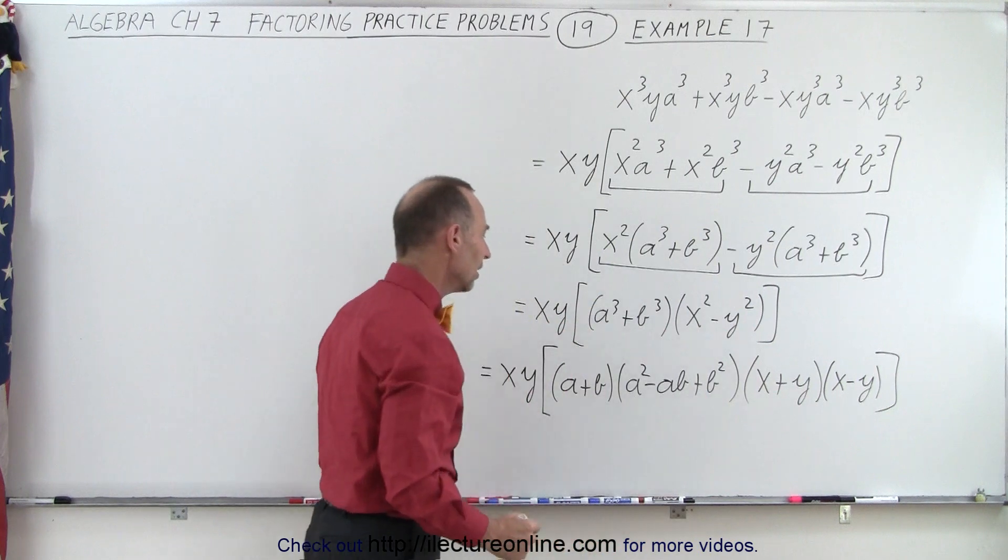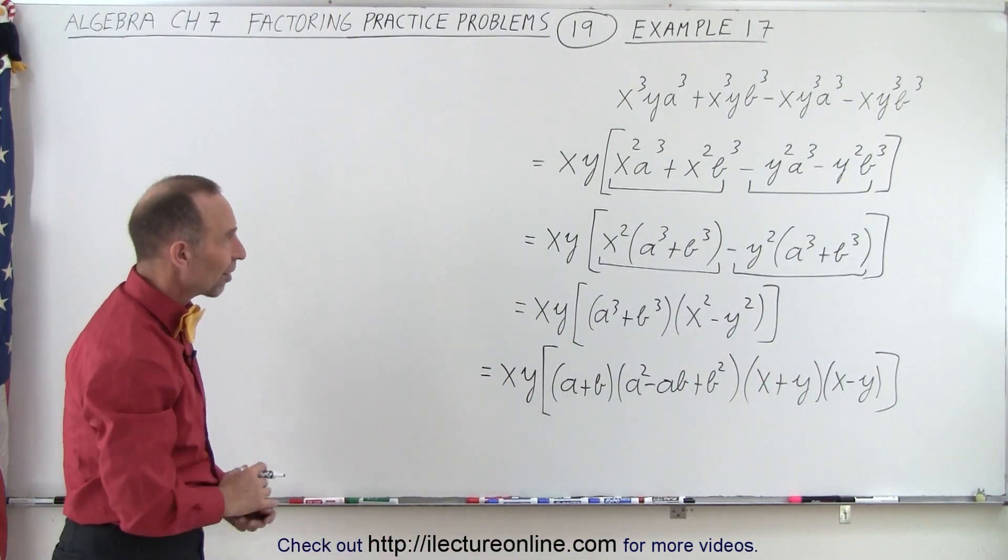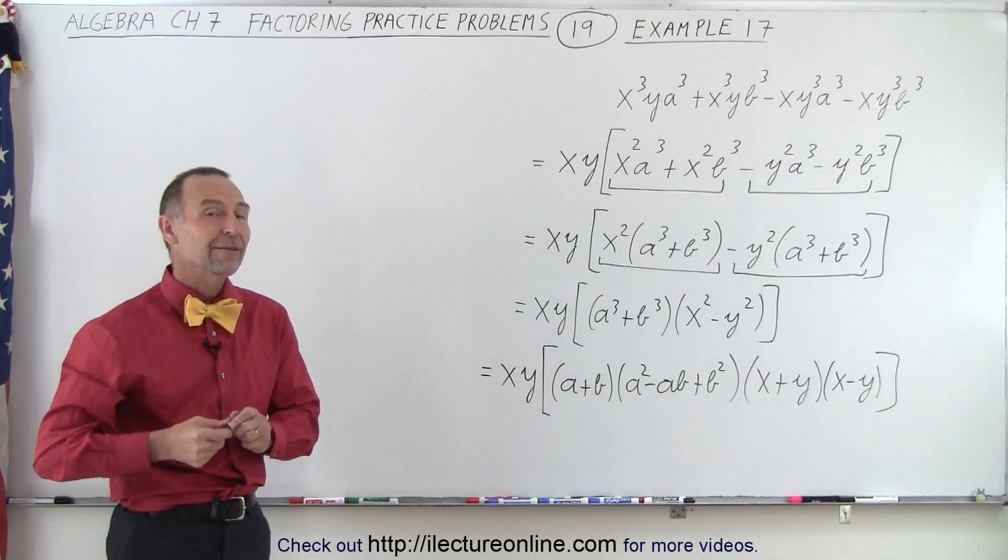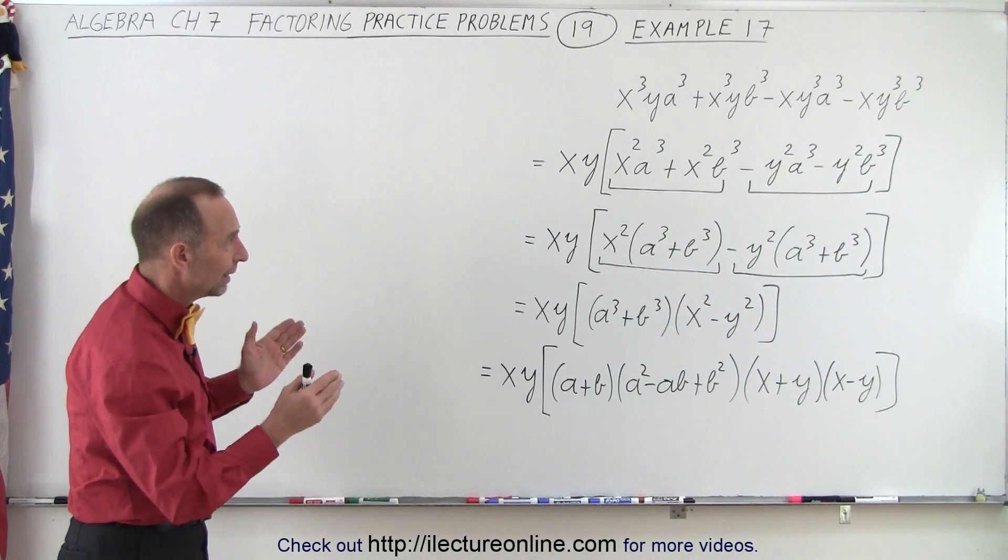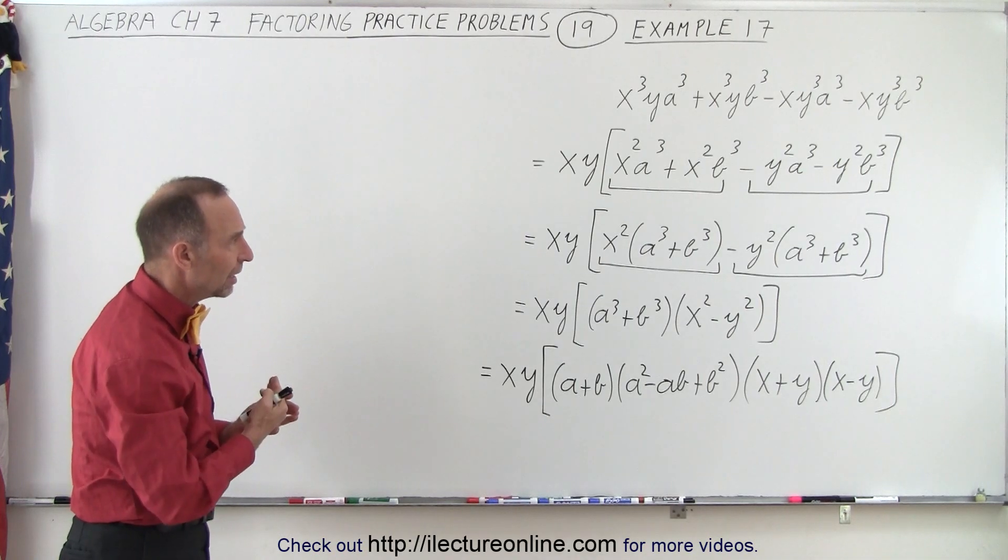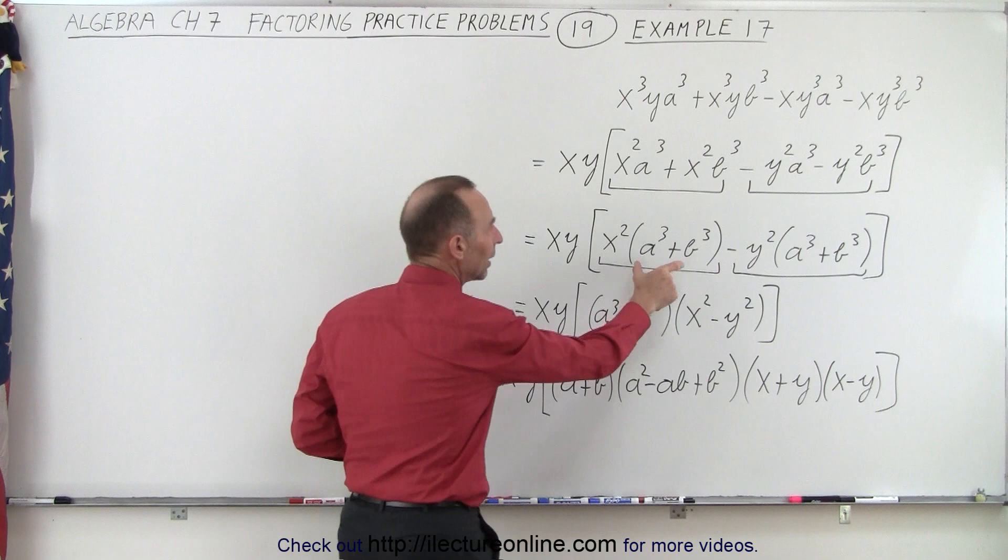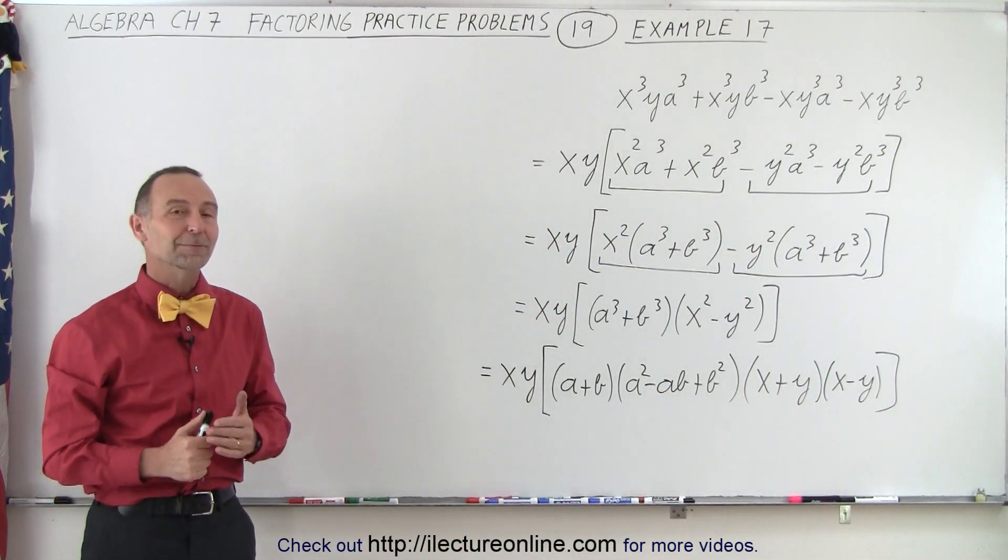And as you can see, we did it. We actually did factor that monstrosity in the beginning. It is factorable, and it all starts by first removing or factoring out the common factors of each term, and then by grouping two by two, factoring out what's common in each group of two terms, and then you can begin to see the commonality and factor out what's common and what's remaining. And that is how it's done.